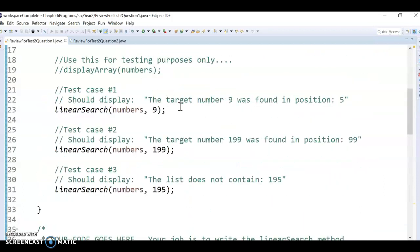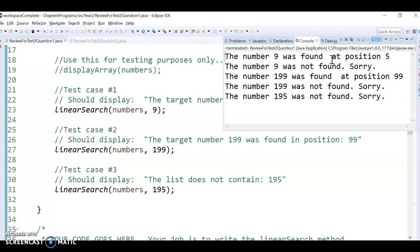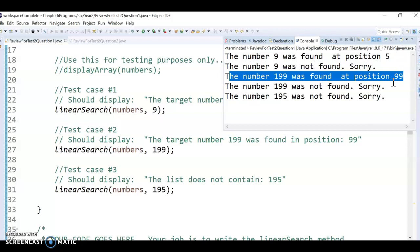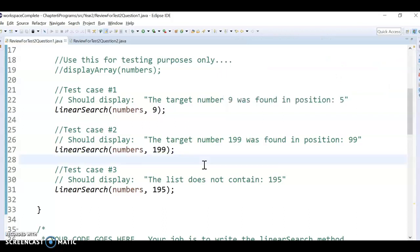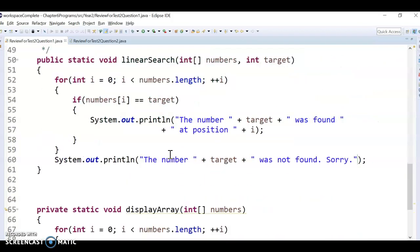So according to these directions, it should find the first two, but then it should not find the 195. So if I run it, it says number nine was found at position five, but then it says it's not found, sorry. And it says the 199 was found at position 99, but then it also says it's not found, okay? So this is a situation where we really haven't encountered it much yet before. So if you didn't get this, not a big deal.